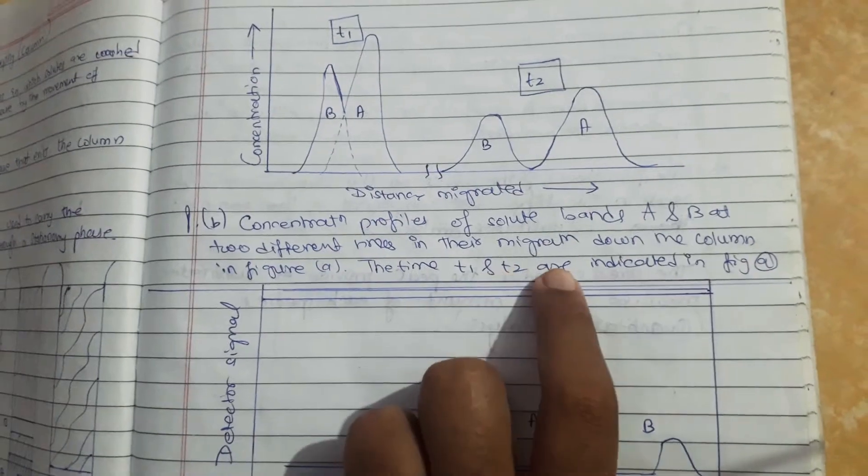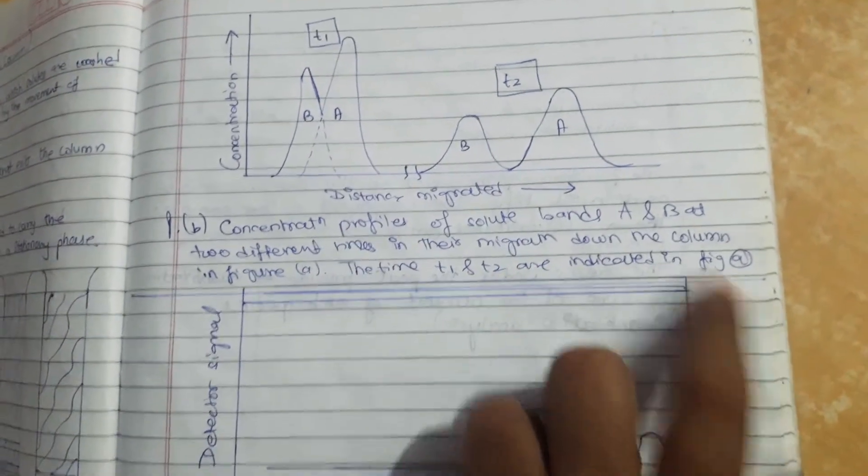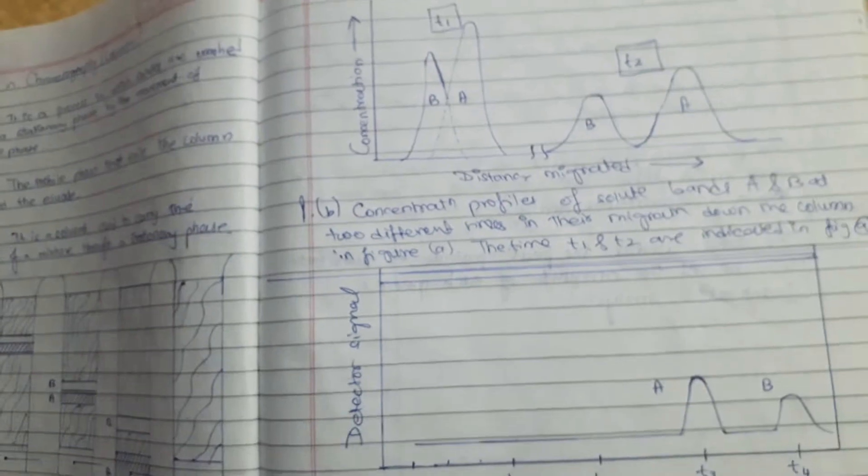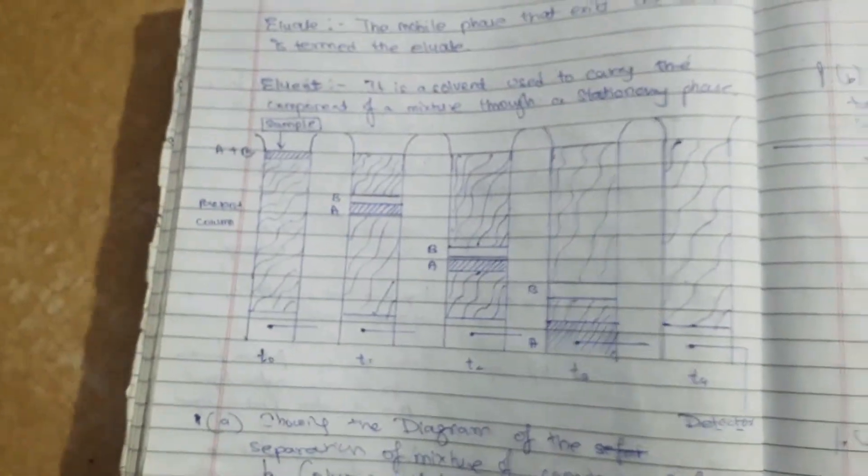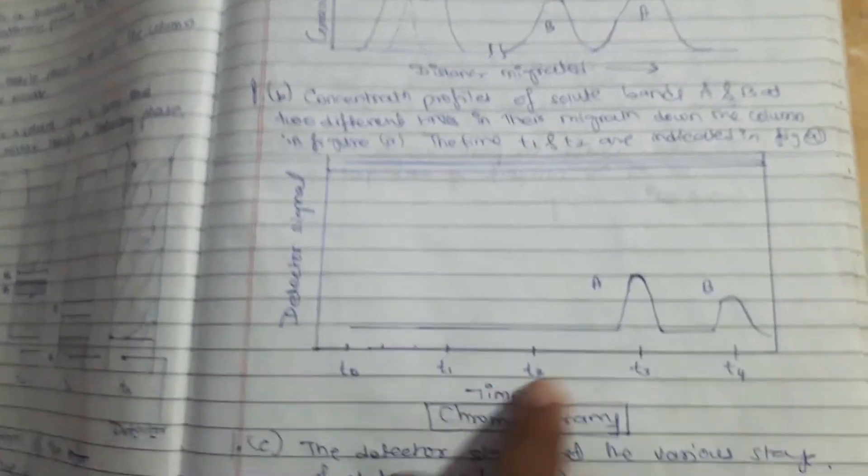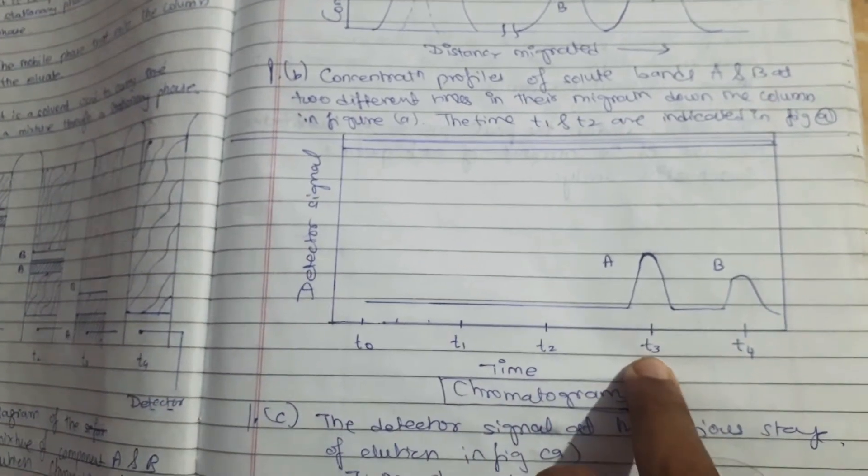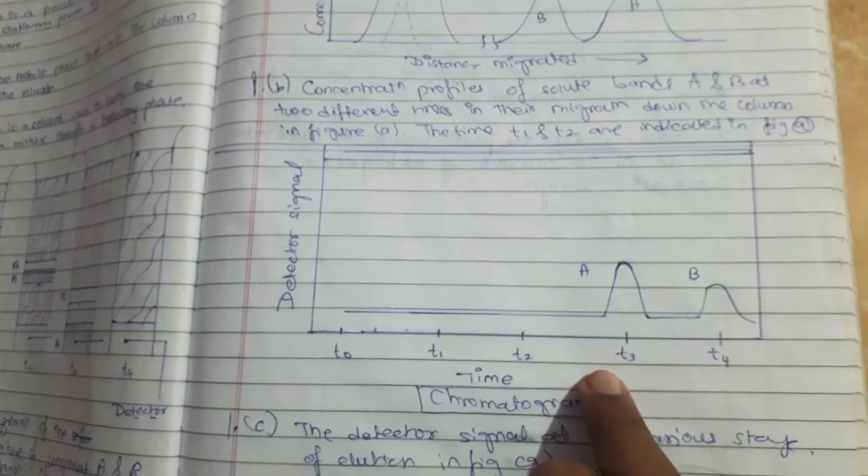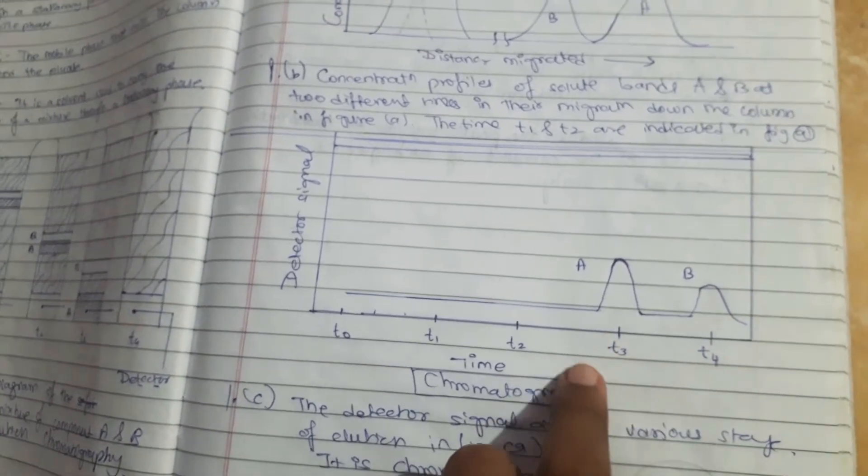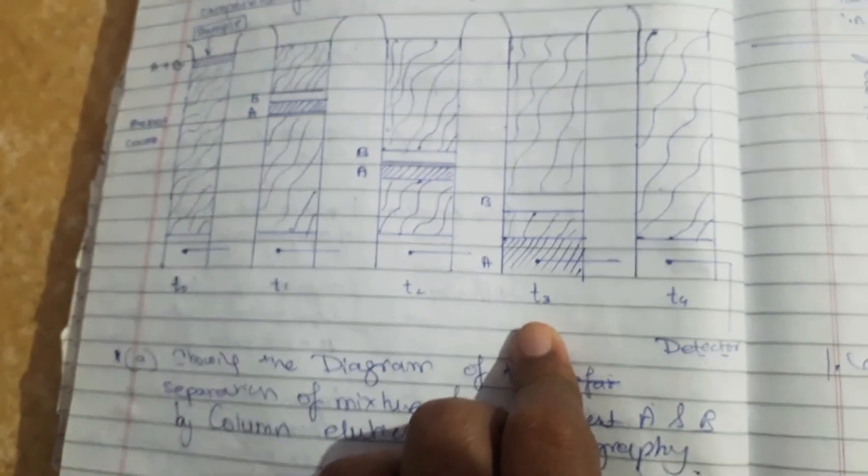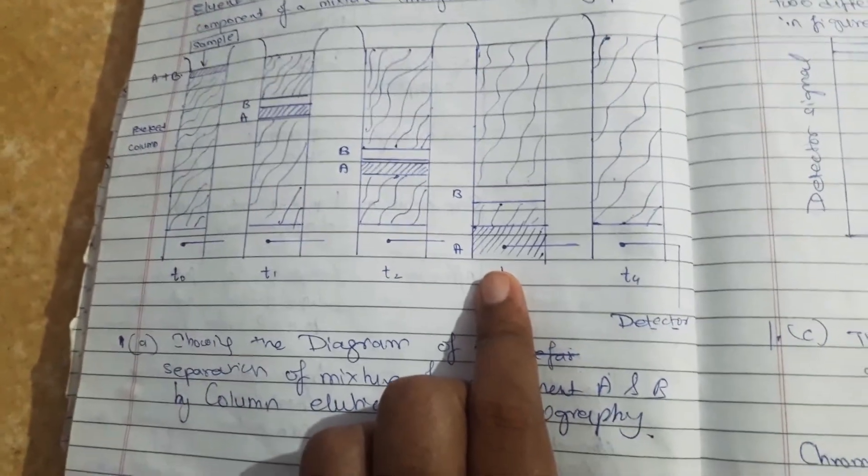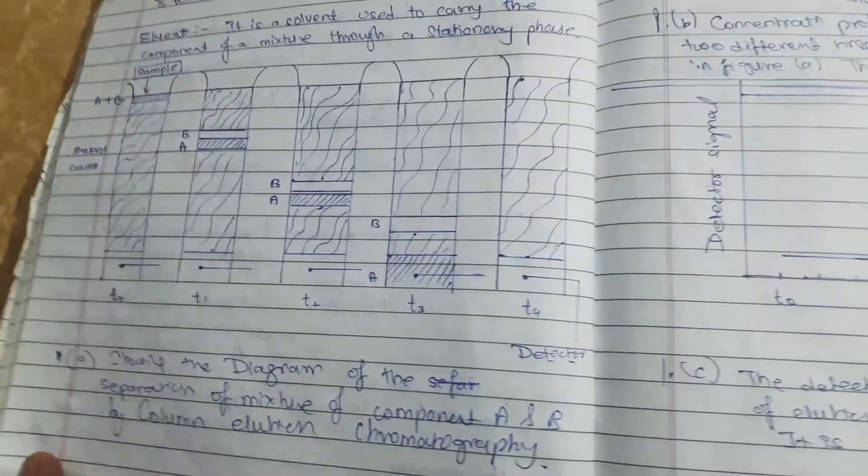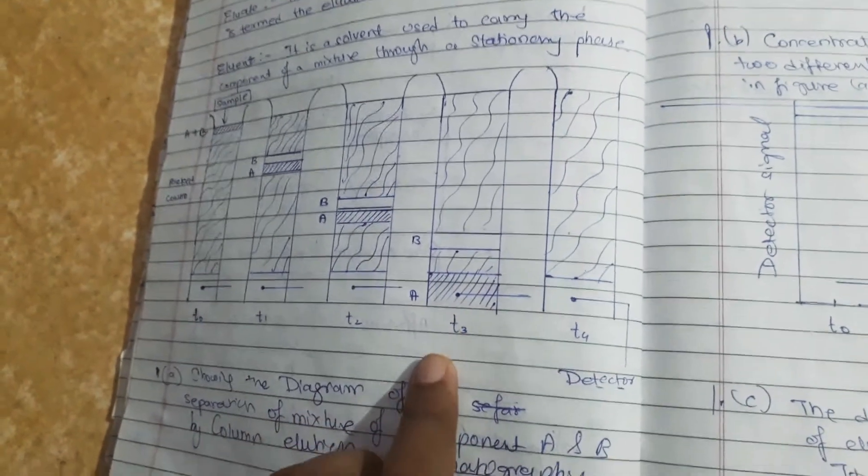This diagram is the concentration profile of solute bands A and B at two different times in their migration down the column. In Figure A, times t1 and t2 are indicated. At stage t3, we already saw that first A comes out of the column because its affinity is more towards the mobile phase compared to B. That's why at stage t3, component A will come out of the column.